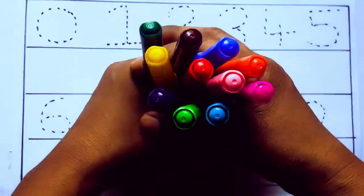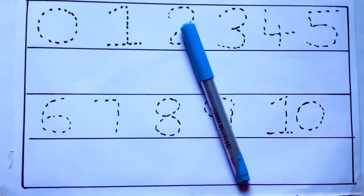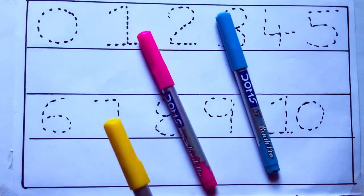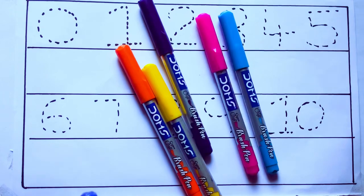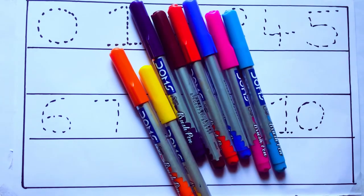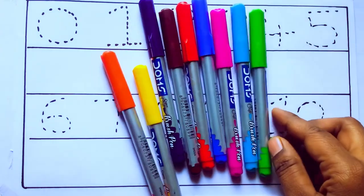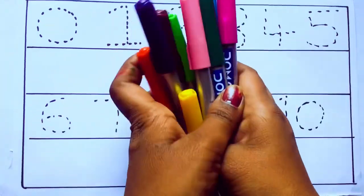Let's learn some colors. These are all the color pencils. Let's learn the names. Sky blue color, pink color, yellow color, orange color, violet color, blue color, brown color, red color, green color, and pink color.